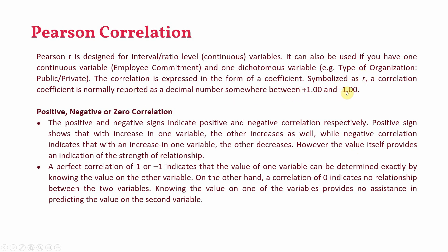The Pearson correlation coefficient gives you the strength of relationship — how strongly the two variables are linked with each other. A perfect correlation of +1 or −1 indicates that the value of one variable can be determined exactly by knowing the other. On the other hand, a correlation of zero indicates no relationship whatsoever between the variables. Knowing the value of one variable provides no assistance in predicting the value of the other.